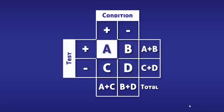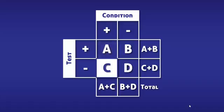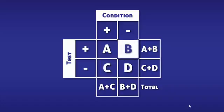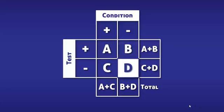In box A we have the true positives because these people have the condition and tested positive for it. In box C we have the false negatives because these people have the condition but tested negative for it. In box B we have the false positives because despite not having the condition, they tested positive for it. In box D we have the true negatives because these people did not have the condition and tested negative for it.